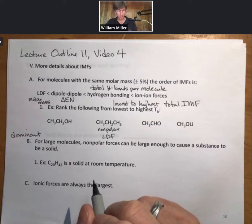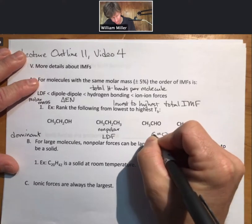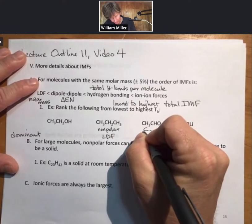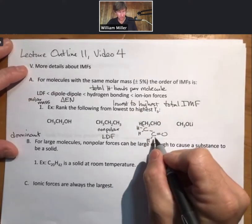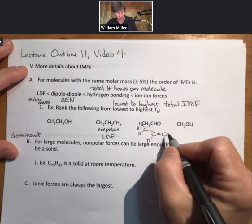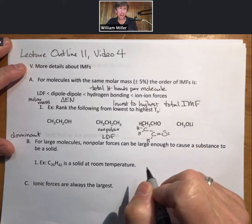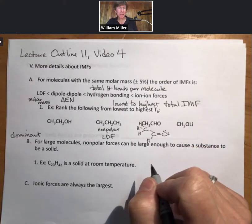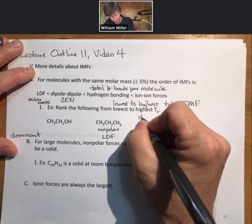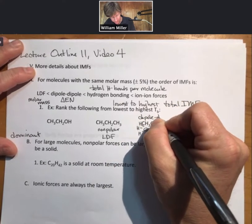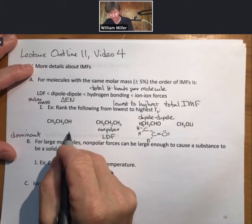We're not sure what that looks like, or maybe we are, but if you're not sure, always draw the Lewis structure. This one has C double bond O. It does not have oxygen bonded covalently to a hydrogen. It cannot have hydrogen bonding. This is dipole-dipole forces.